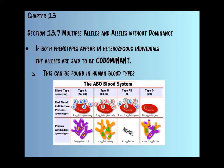If both phenotypes appear in heterozygous individuals, the alleles are said to be codominant. We're going to look at codominance, which is definitely found in human blood types. We can have either A blood, B blood, AB blood, or O blood. We're going to look at what signifies each blood type and explain how that divulges into codominance.